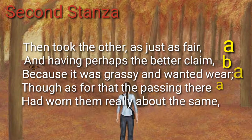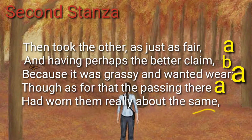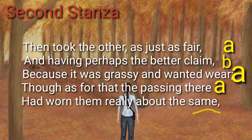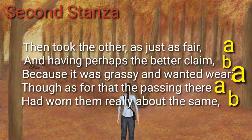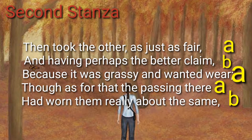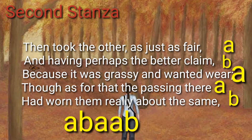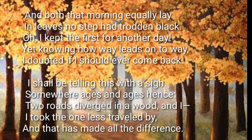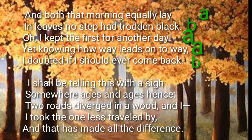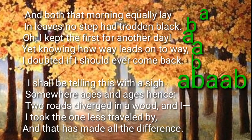In the last line, the last word is 'same' and it is rhyming with 'claim', so name it as B. So the rhyme scheme of the second stanza is also A B A A B. Similarly, in the last two stanzas, the poet has followed the same rhyme scheme — A B A A B.